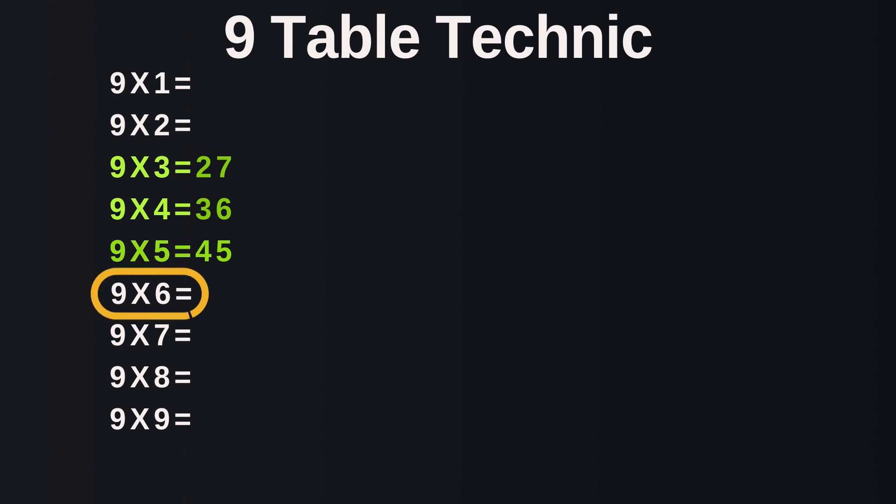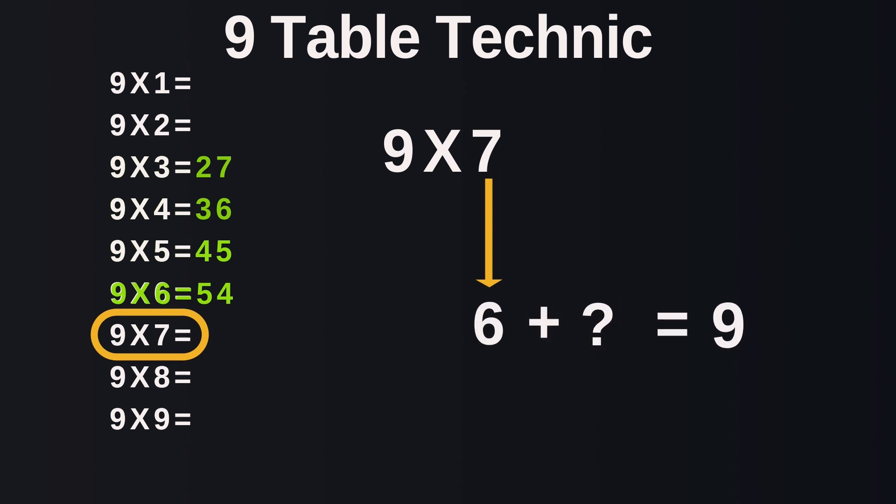Now let's try 9 times 6. The digit right behind 6 is 5, and what digit will give us 9 when added to 5? 4. This makes our answer for 9 times 6 to be 54. Now let's give 9 times 7 a go. The digit directly below 7 is 6. Now what digit when added to 6 will give us 9? 3. This makes our answer to 9 times 7, 63.